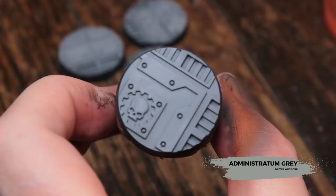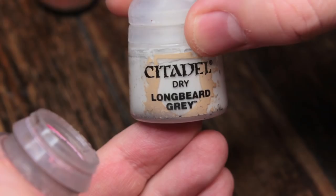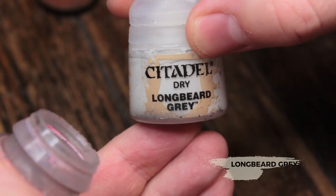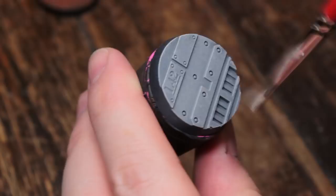Now I'm going to take Administratum Grey and I'm going to sponge on some chips with that. Now I'm going to dry brush on some Longbeard Grey, and I'm going to do this in all directions, we want it to catch all of the edges.